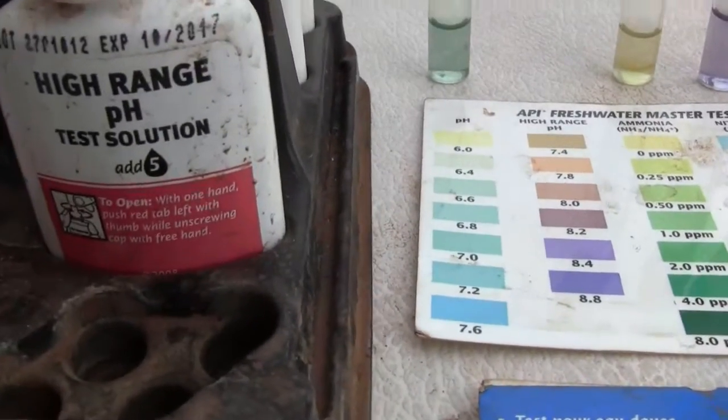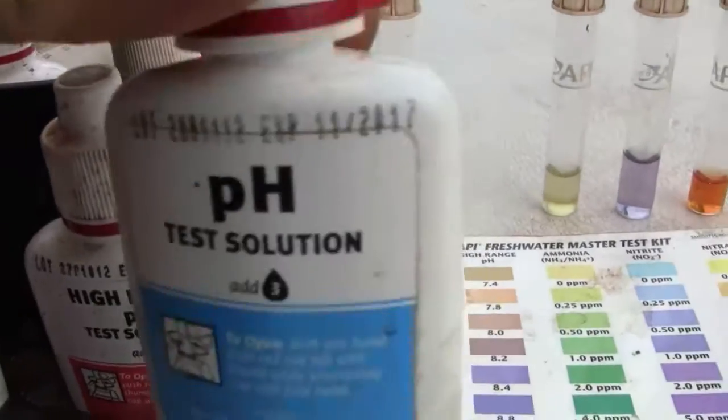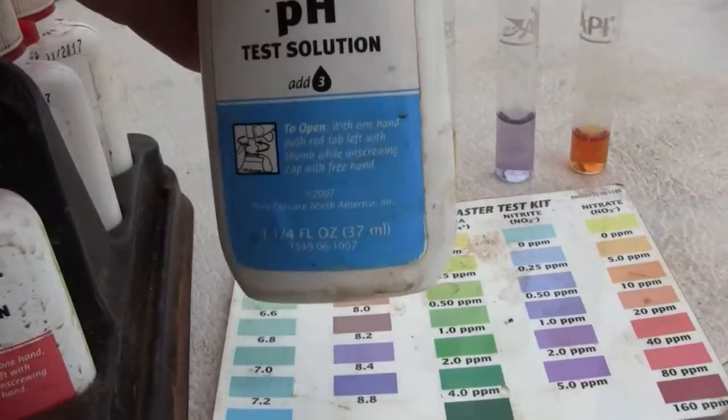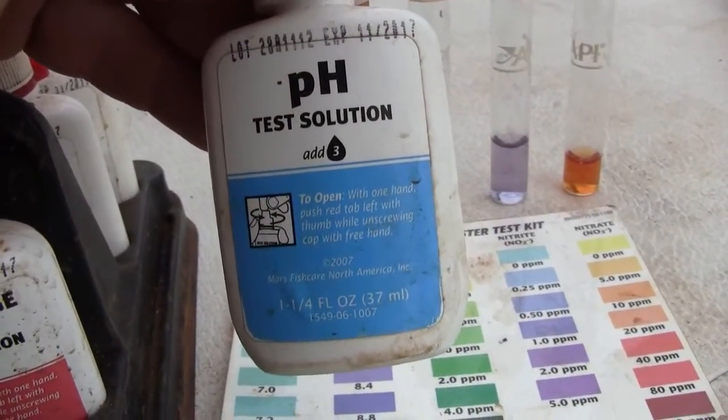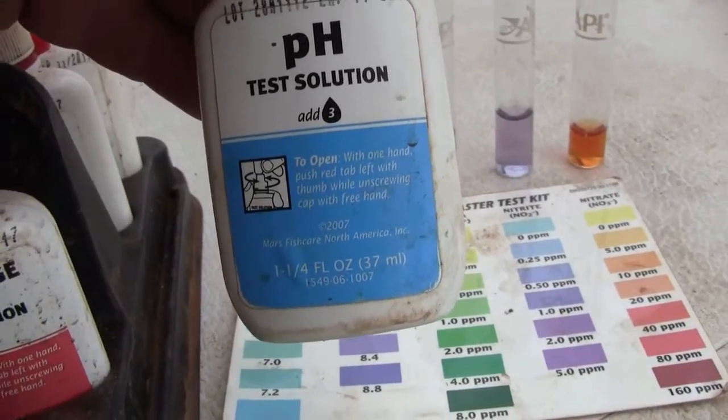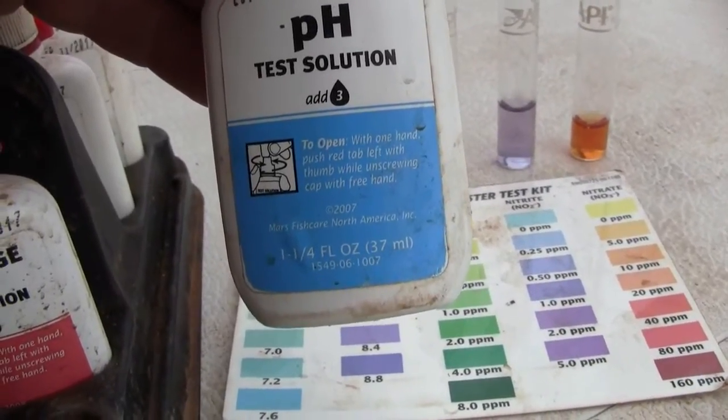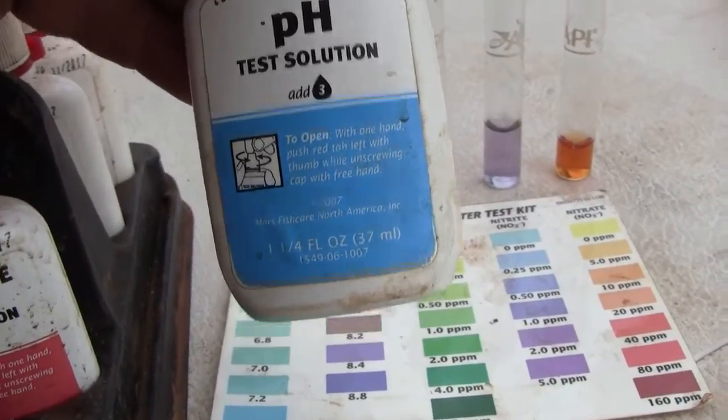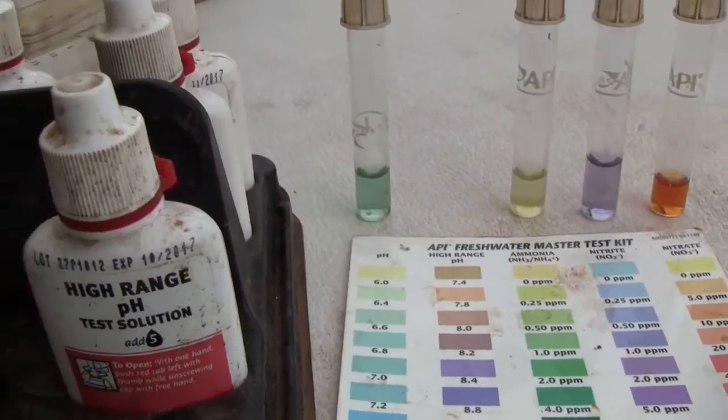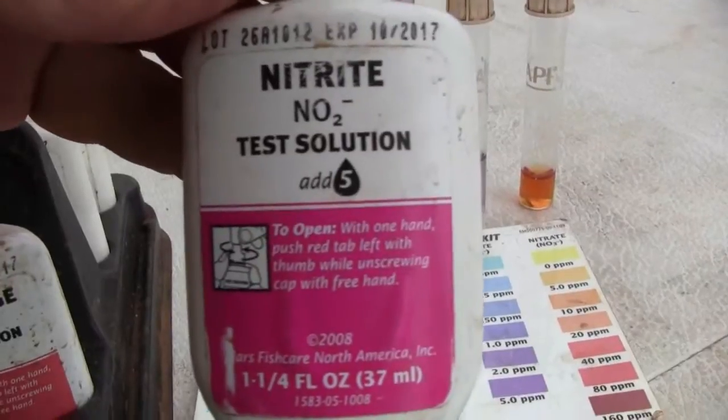If the pH is supposed to go up to the line and requires three drops, then the line divided by three is the amount of liquid that you need, so that's one third. For nitrite you add five drops.